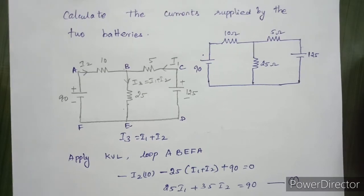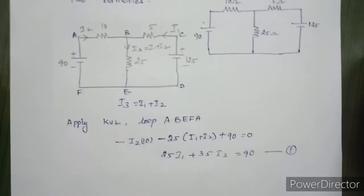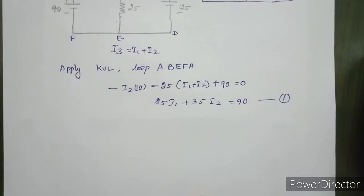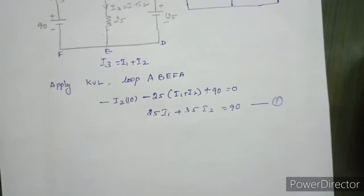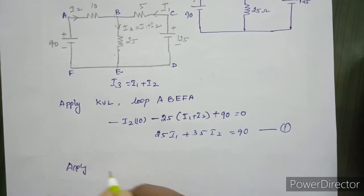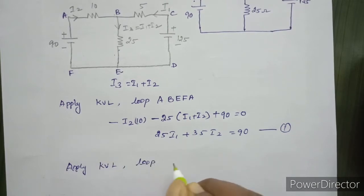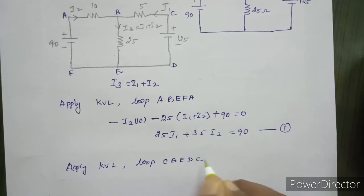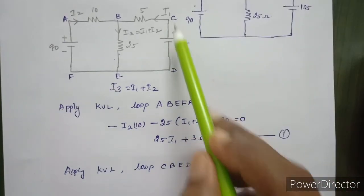We need to get one more equation, so we need to cut another equation using a second loop. If we have two variables, we need to solve two equations. That's why we can use this loop. Apply KVL to loop C, B, E, D, C.